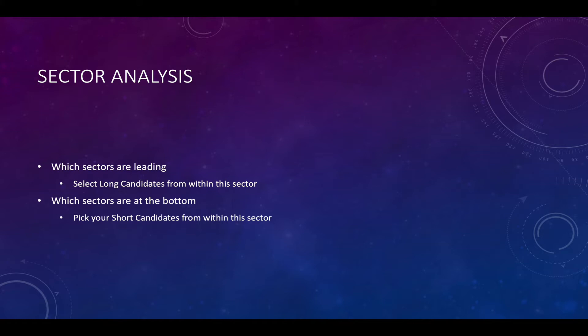So once you've identified which sectors are leading — and I'll show that live in a couple of minutes — you want to select long candidates from within that sector. If the market is trending downward, focus on sectors at the bottom of the list and pick your short candidates from within that sector. It's just as simple as that.